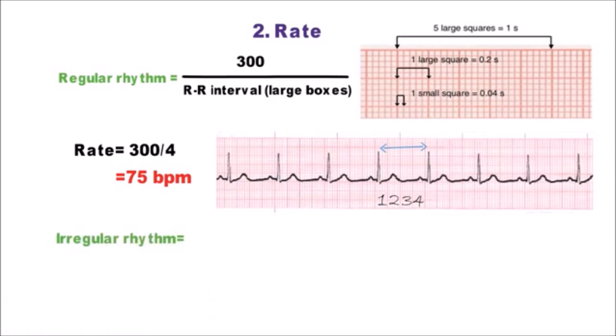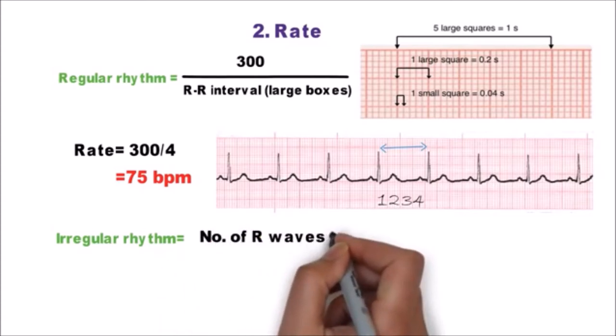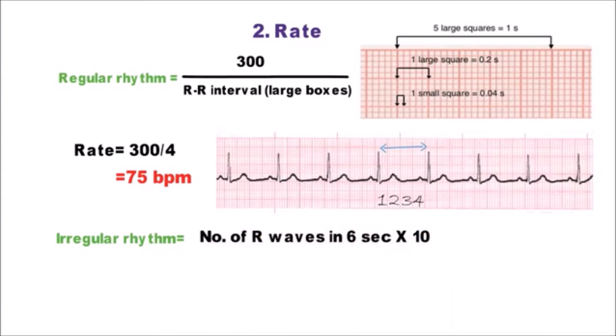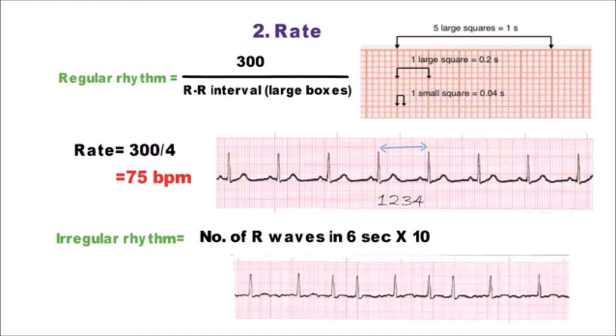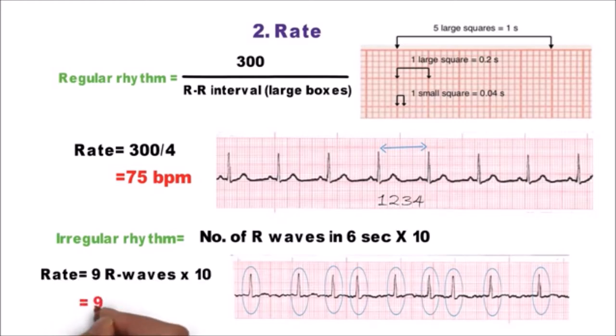But if the rhythm is irregular on ECG as in atrial fibrillation, rate is calculated by number of R waves in 6 seconds multiplied by 10 so as to get rate per minute. So in this ECG strip there are 9 R waves or 9 QRS complexes. So the rate comes out to be 90 beats per minute.